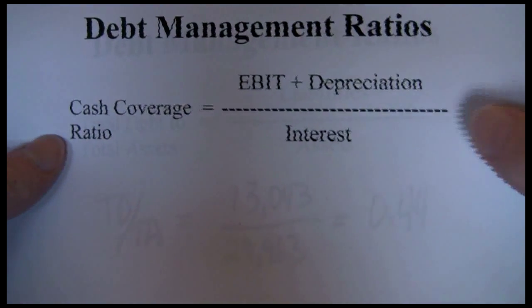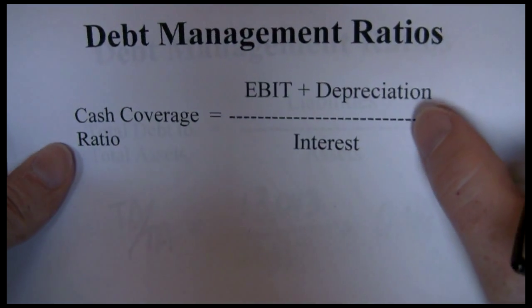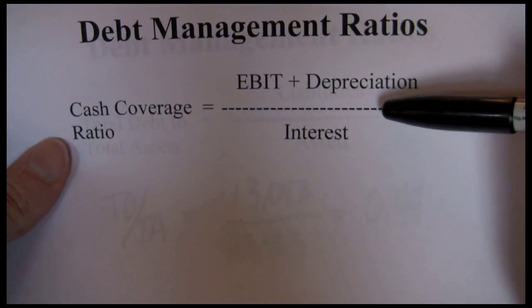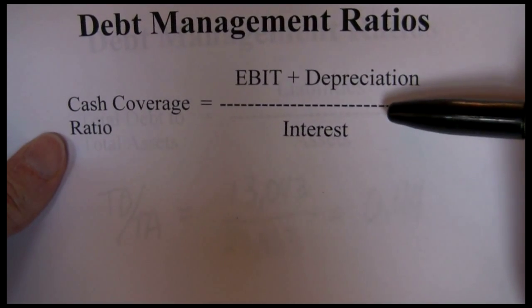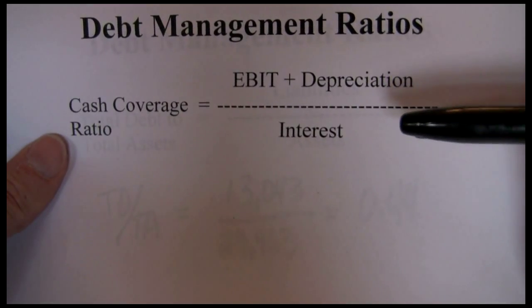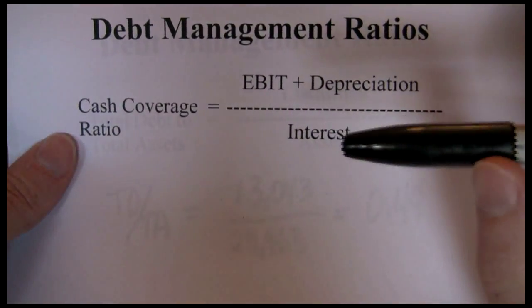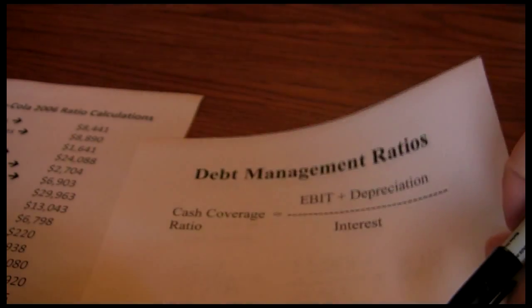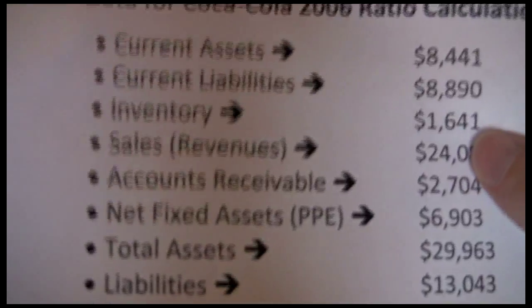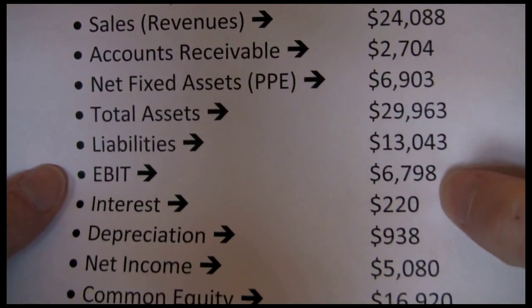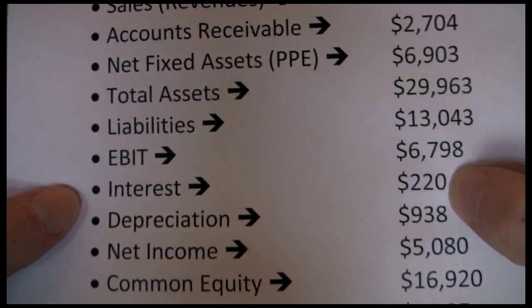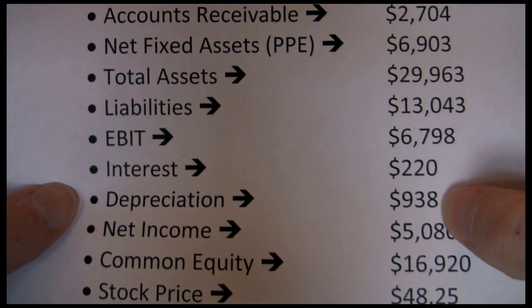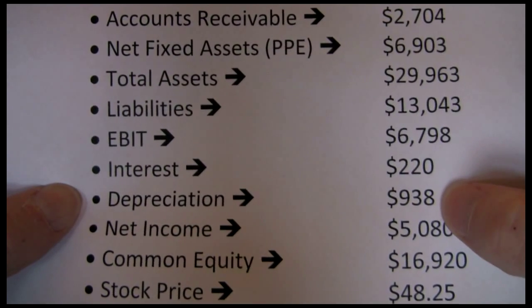The cash coverage ratio is nice because it adds in our depreciation. While depreciation lowers our earnings before interest and taxes on an accounting basis, it has no impact on our cash flows — we're not really spending anything. So technically that depreciation is available to make our interest payments. When we're looking on a cash basis, this is maybe a better measure of our ability to meet our interest obligations than the times interest earned ratio. For the cash coverage ratio, we need our earnings before interest and taxes, our interest expense, and now we also need depreciation, which is available on the statement of cash flows.